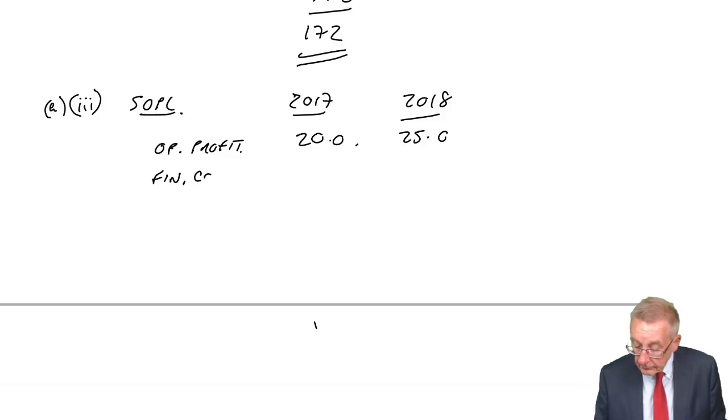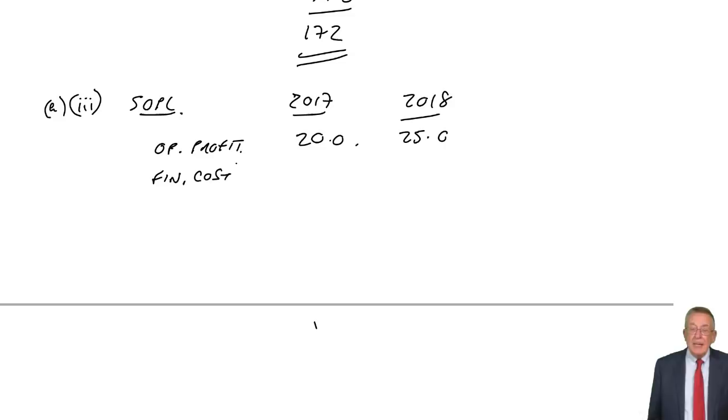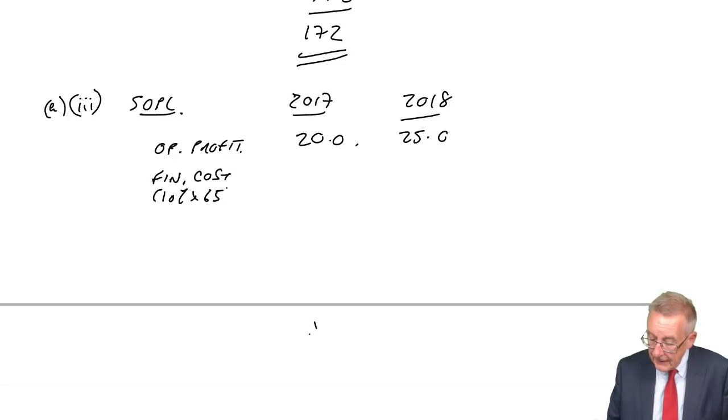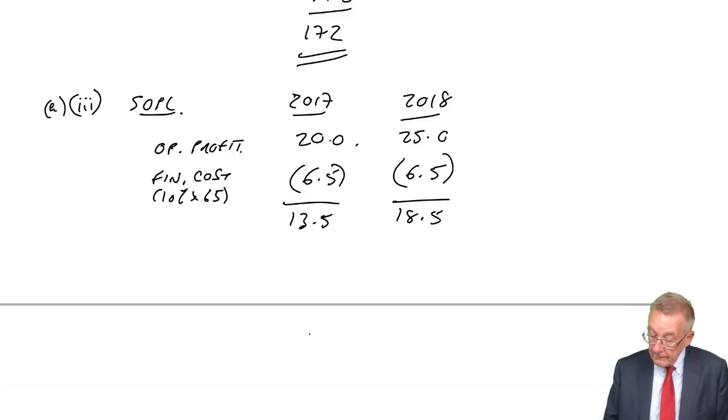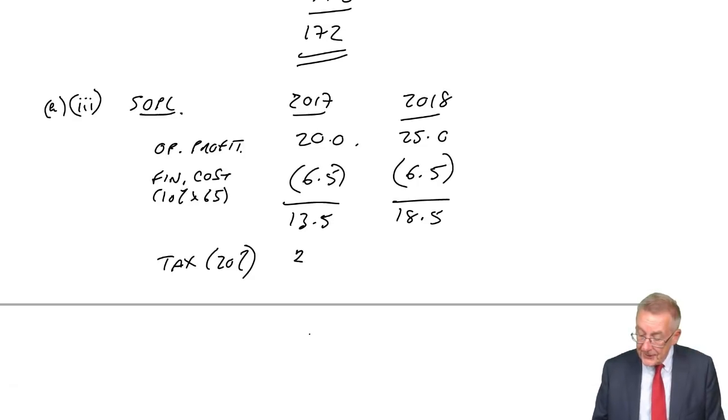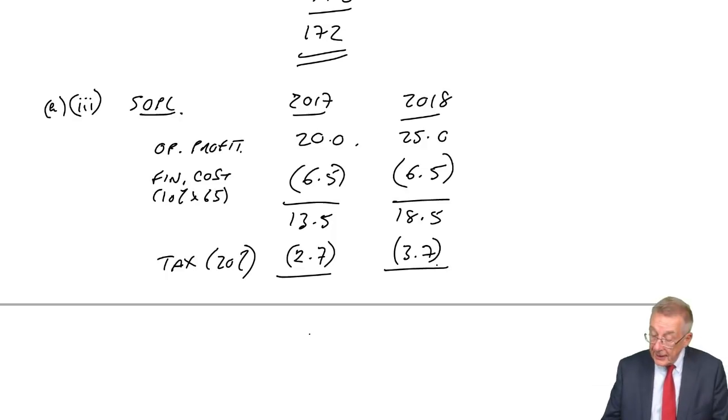What about the finance cost? Well, remember, Patel's loan has been repaid. The bank loan, it was increased to 65 million and the cost of the loan 10% a year. So 10% of 65 million, 6.5 million. That leaves a profit before tax of 13.5 and 18.5. Tax, the very last line before required says it remains at 20%. So 20% of 13.5 is 2.7, I think, and 20% of 18.5, 3.7.